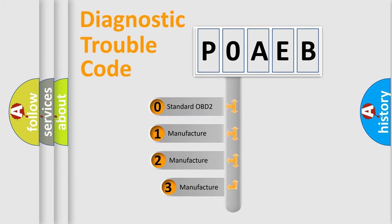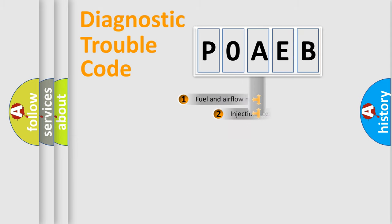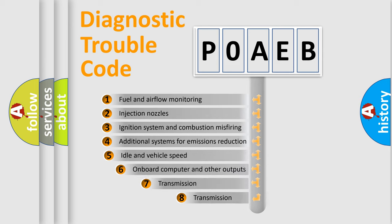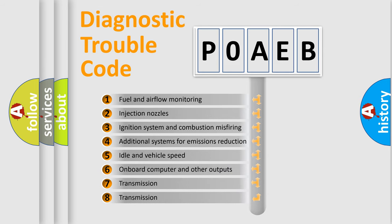If the second character is expressed as zero, it is a standardized error. In the case of numbers 1, 2, or 3, it is a more prestigious expression of the car-specific error. The third character specifies a subset of errors.